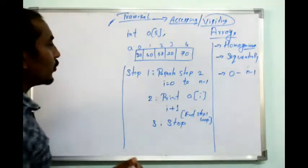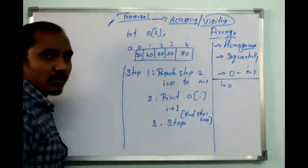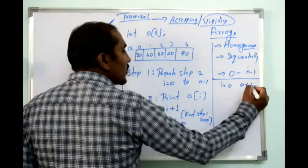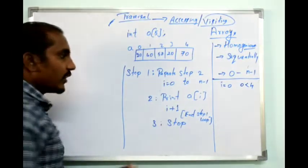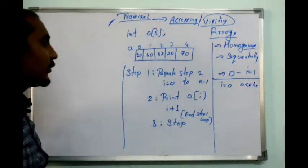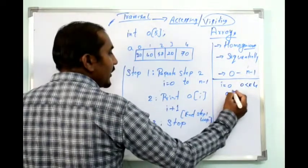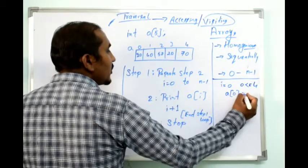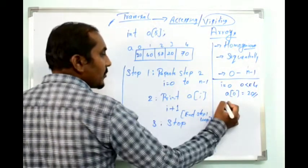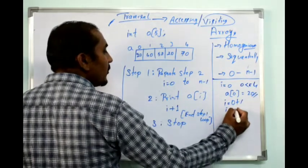Tracing the algorithm: initially i equals 0. 0 is less than or equal to 4 (since we have elements up to index 4), so we execute step 2 — print a[0], which is 20. Then i becomes i plus 1, so i becomes 1.